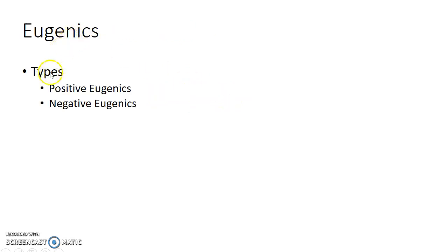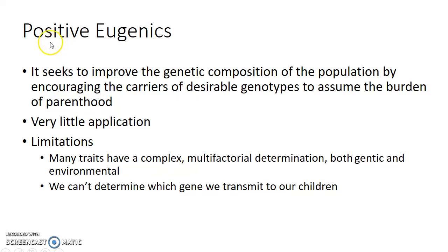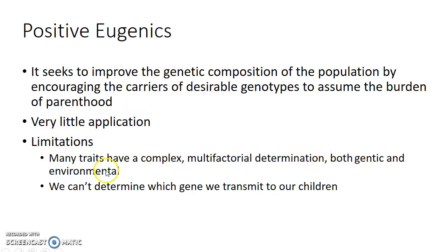There are two types of eugenics: positive eugenics and negative eugenics. Positive eugenics seeks to improve the genetic composition of the population by encouraging carriers of desirable genotypes to assume the burden of parenthood. However, positive eugenics has very little application due to two limitations: many traits have complex multifactorial determination governed by both genetic and environmental factors, and we cannot determine which genes we transmit to our children.